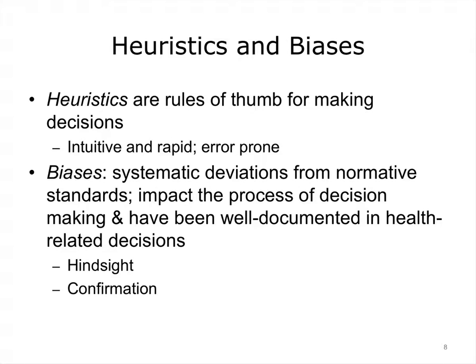It is not surprising that humans are fallible reasoners and flawed decision makers. We routinely see how society's professional decision makers — like judges, politicians, and coaches — make poor decisions. The heuristics and biases approach was pioneered by Tversky and Kahneman, who worked for many years to understand the nature of human decision making. Heuristics are rules of thumb we routinely use for making decisions; they tend to be intuitive and rapid but can be error-prone. Biases are systematic deviations from normative standards and have been well documented in health-related decisions by clinicians and patients alike.